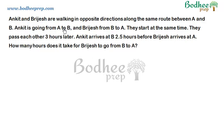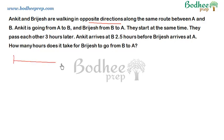The question says that Ankit and Vijayesh are two people moving in opposite directions along the same route between A and B. Ankit starts from A and moves towards B, and Vijayesh starts from B and moves towards A. So the situation is something like this: point A on one side, point B on the other, Vijayesh moving in one direction and Ankit moving in the other.